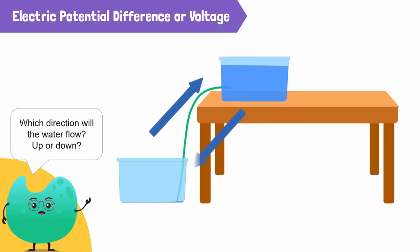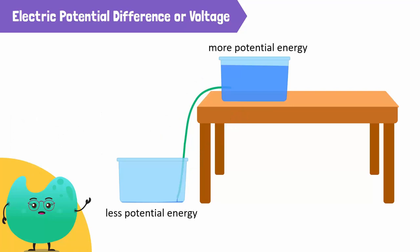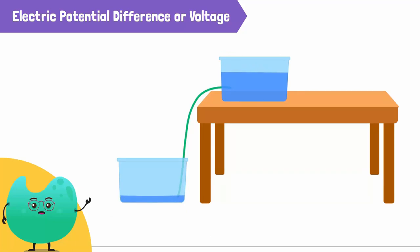Up or down? Because water in the higher can has more potential energy, water will flow from the higher can into the lower can. Water cannot flow from the lower can to the upper can.